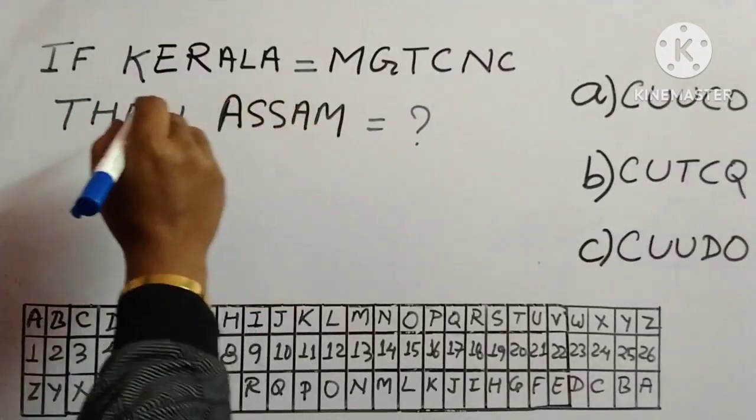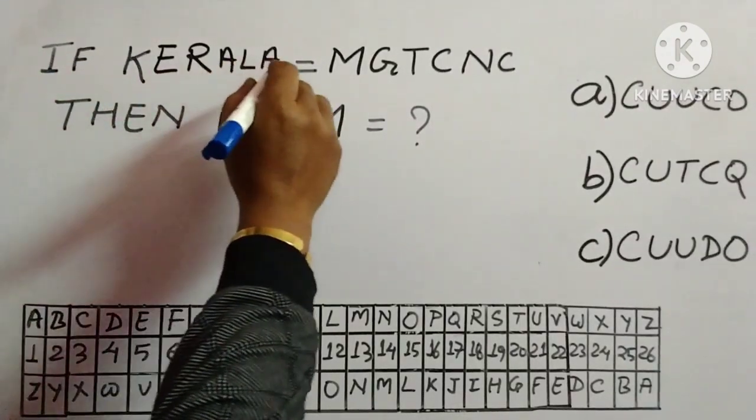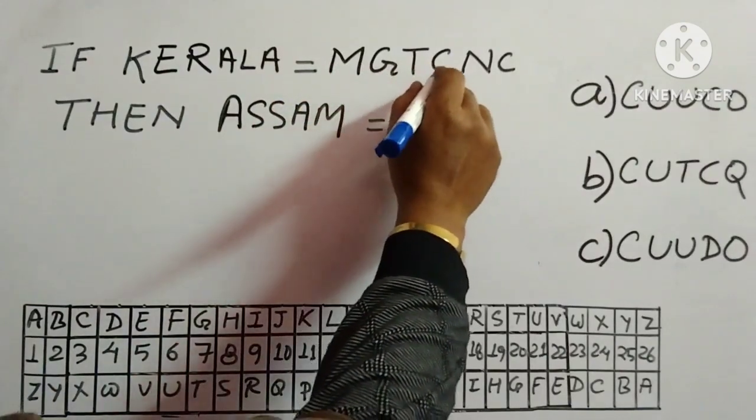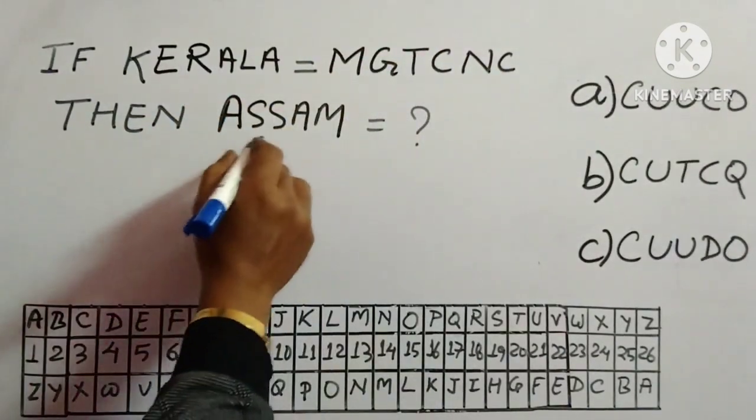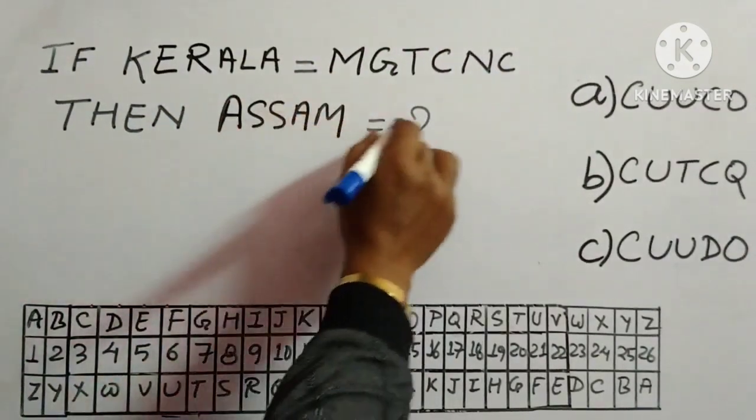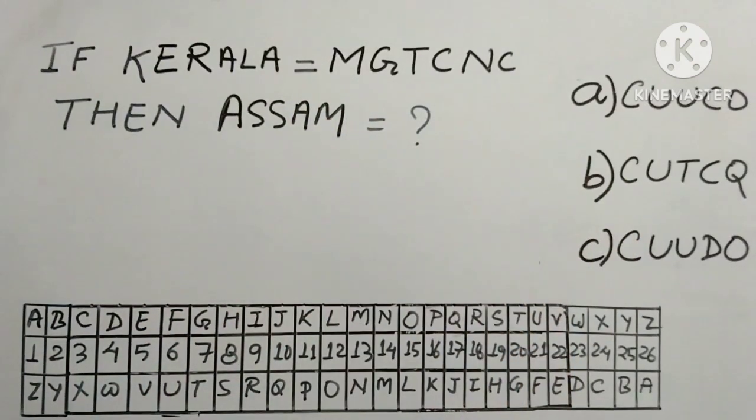This is a question of coding decoding here. If Kerala is equal to M, G, T, C, N, C, then how will Assam be written? Three options are given.